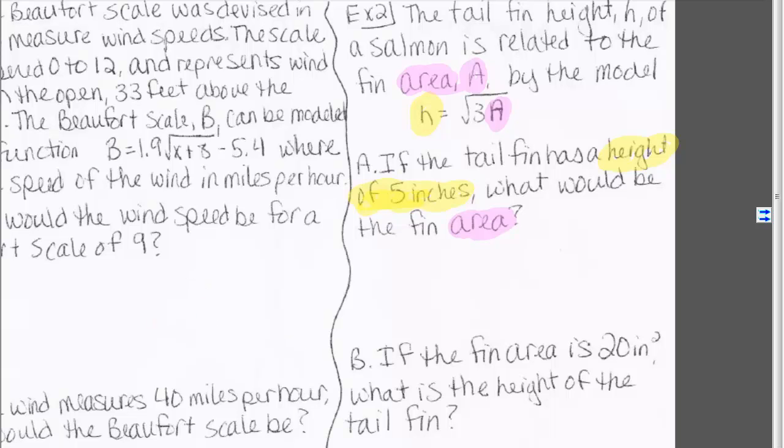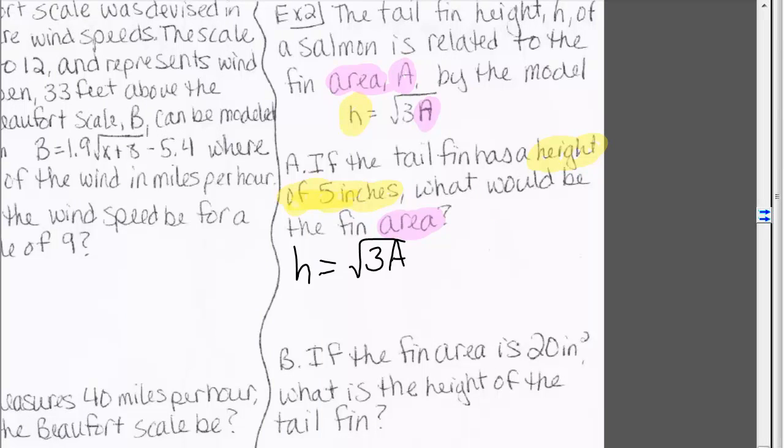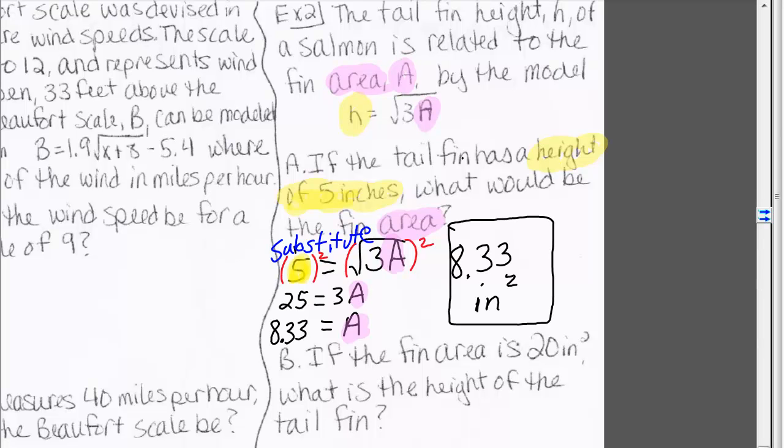Let's look at example a. We are given the height to be 5 inches, so we substitute this into our formula. Now we square both sides to undo the square root. We are left with 25 equals 3A. Dividing both sides by 3 gives us 8.33 inches squared.